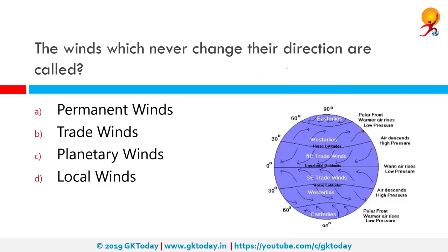The winds which never change direction are called planetary winds. The pressure difference created due to temperature difference on the planet causes planetary winds. The wind and pressure systems of the Pacific conform closely with the planetary system, so Pacific winds are the closest winds in accordance with planetary winds and are used to study them.